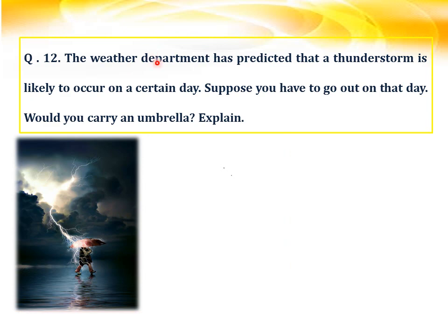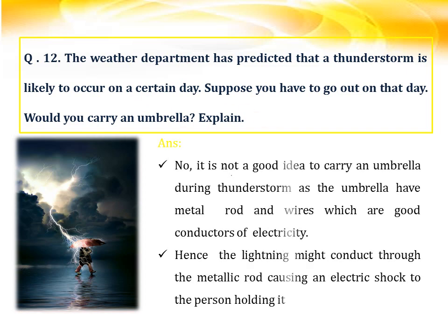Question number twelve: the weather department has predicted that a thunderstorm is likely to occur on a certain day. Suppose you have to go out — would you carry an umbrella? No, it is not a good idea to carry an umbrella during a thunderstorm, as umbrellas have metal rods and wires which are good conductors of electricity. Lightning might conduct through the metal rod, causing an electric shock to the person holding it. Hence it is not advisable to carry an umbrella during a thunderstorm.